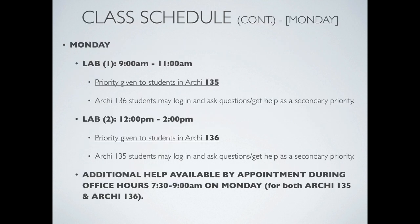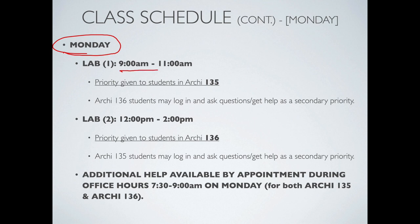Let's talk about the class schedule and open labs. On Monday there are two open lab periods. The first is from 9 a.m. to 11 a.m., and during that period priority is given to you — Architecture 135 students. Architecture 136 students can log in and ask me questions, but I'll only answer their questions when you don't have any questions or are just working. There's a second slot on Monday from 12 noon to 2 p.m., where priority is given to the 136 Rhino and V-Ray students, and you as 135 students can log in when they don't have questions.